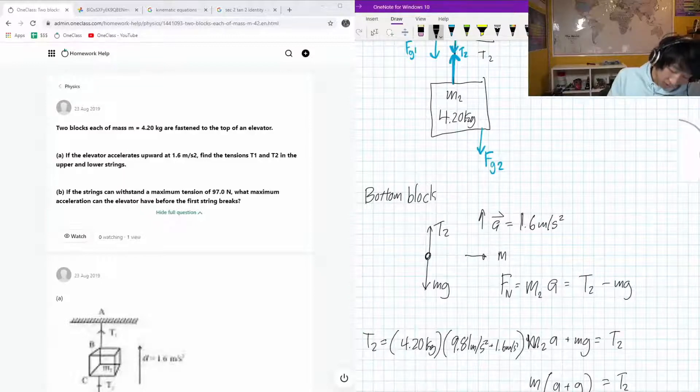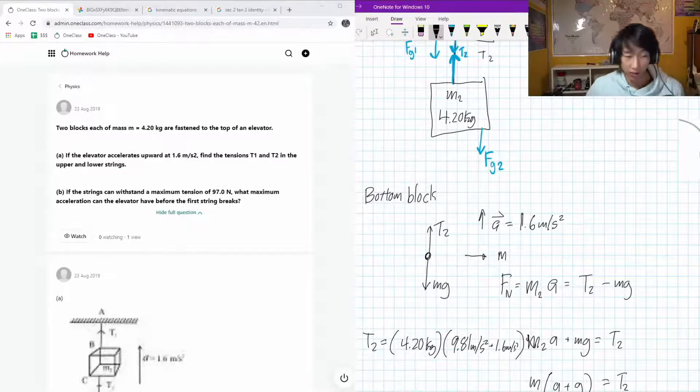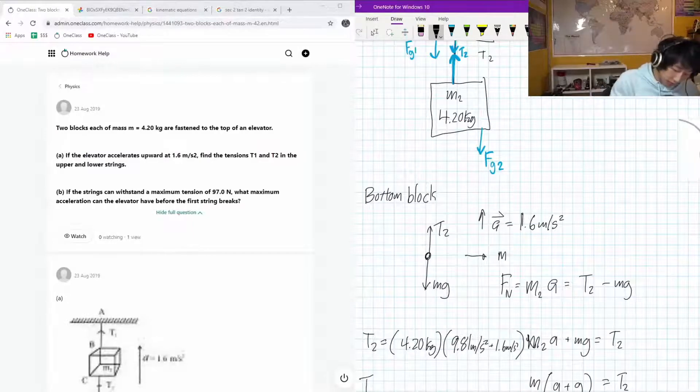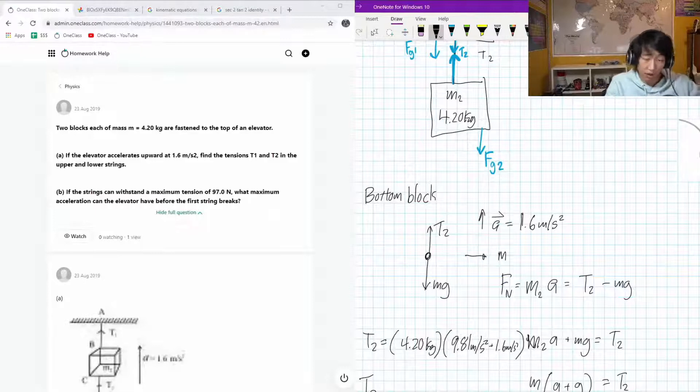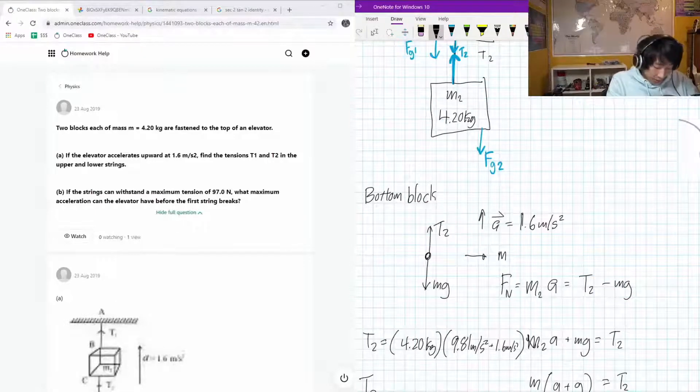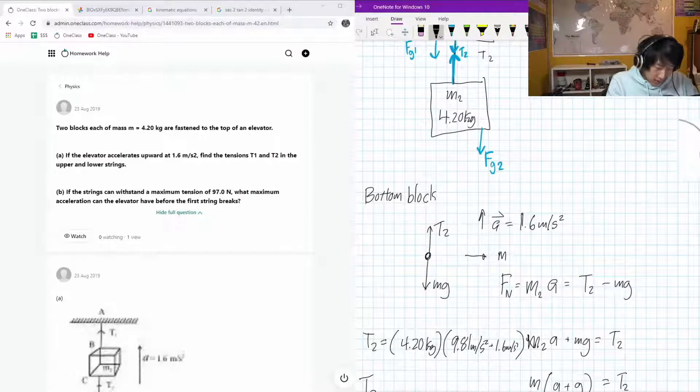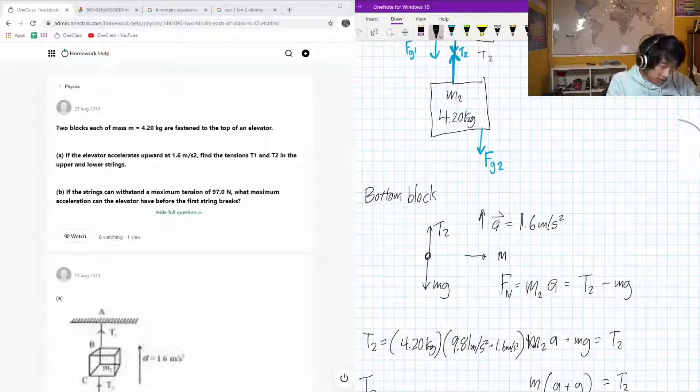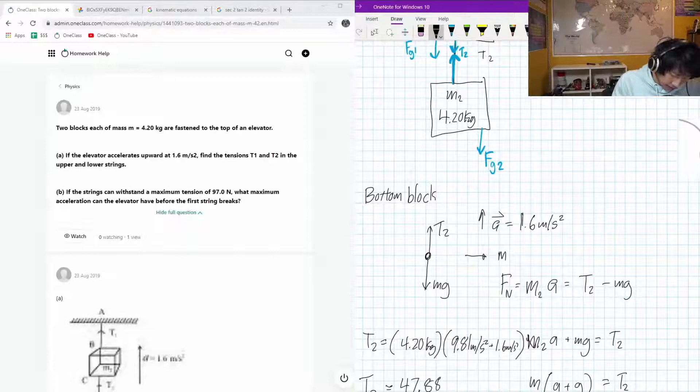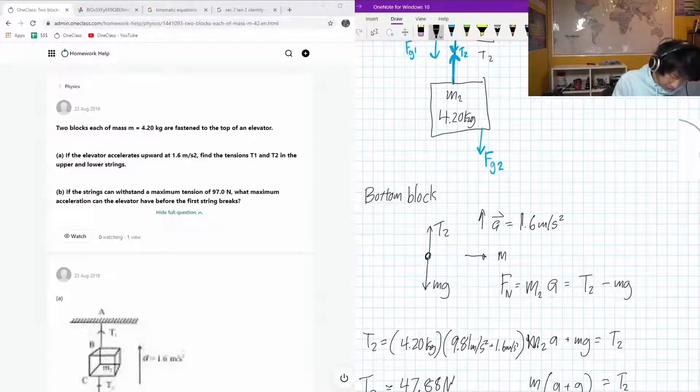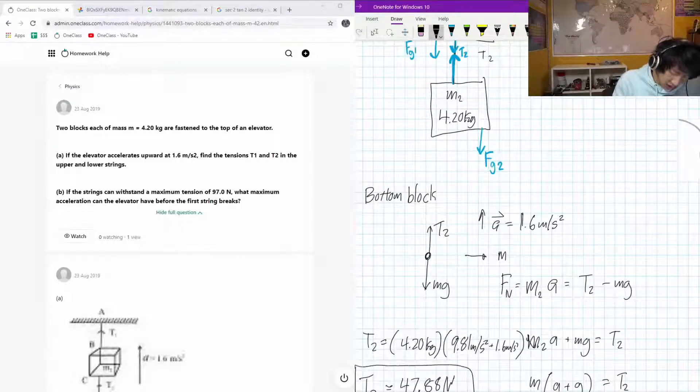Originally, they were going opposite directions, but after the algebra, they're going the same direction. So let's math that out. And it also makes sense because you would expect that the tension to pull it upwards has to be more than gravity. So 4.2 times 9.8 plus 1.6, those are in brackets. And we have equals 47.88 newtons of tension in T2.